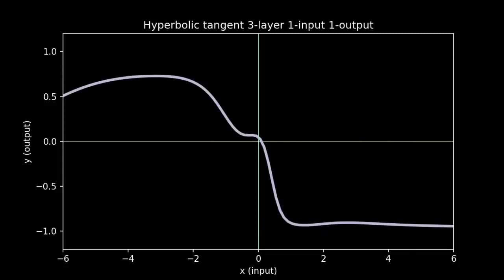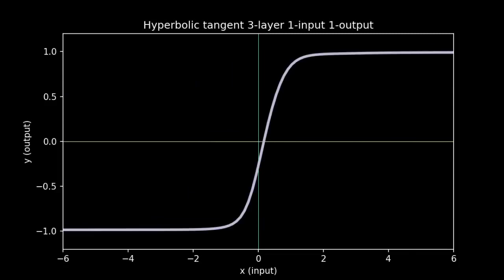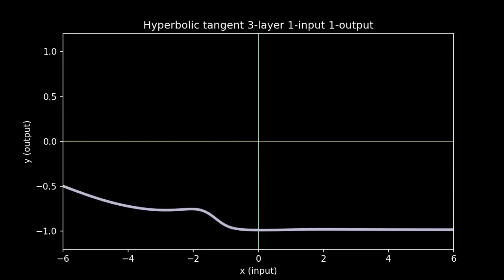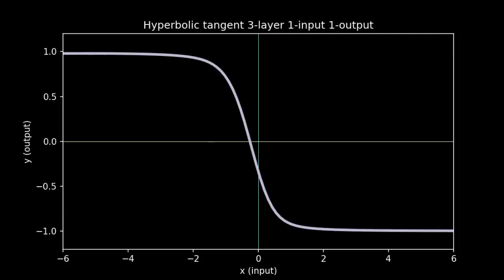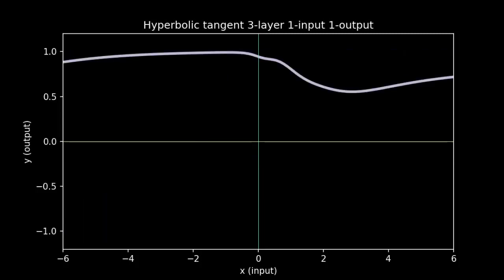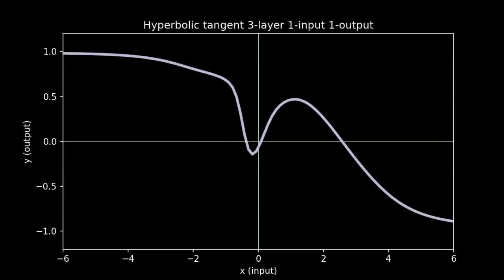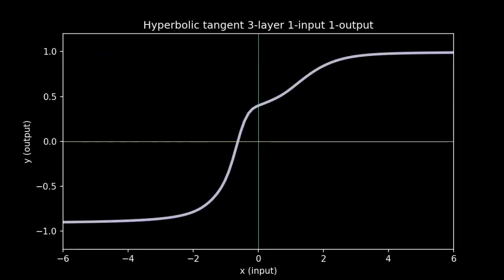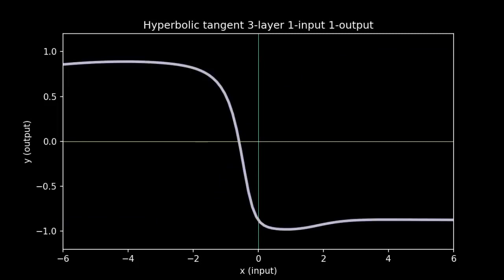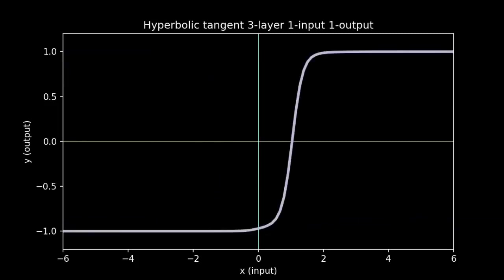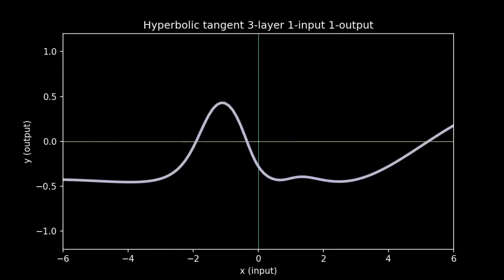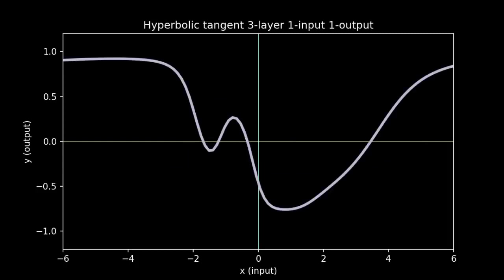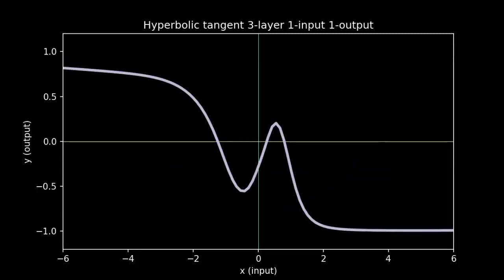The advantage of having a many-layered network is that it can help you create more complex curves using fewer total nodes. For instance, in our two-layer network, we used 100 hidden nodes. But in our three-layer network, we used 11 hidden nodes in the first layer and 9 hidden nodes in the second layer. That's only a fifth of the total number we used in our two-layer network, but the curves it produces show similar richness.